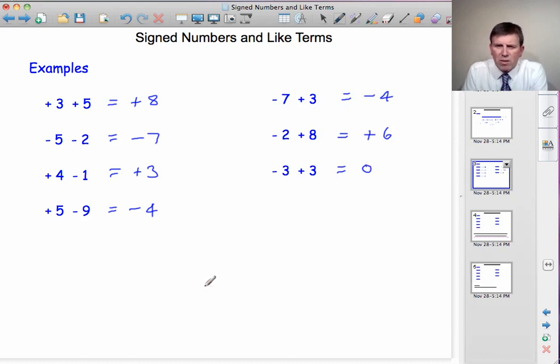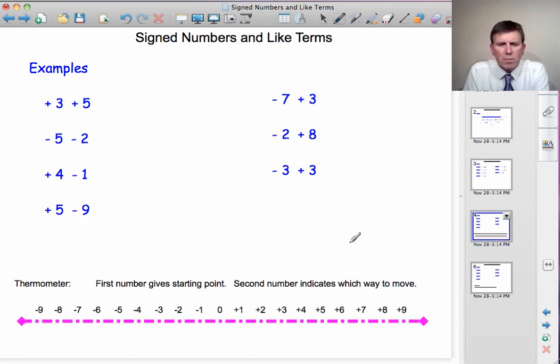So that's the basics of it. But some students struggle with that. And I'm going to offer you now two other methods you can use to get the same answers. See if you like either of these. Let's look at a thermometer. We can take, when we're collecting numbers together, take the first one to give us our starting point on the thermometer. And the second number can tell you which way to move.